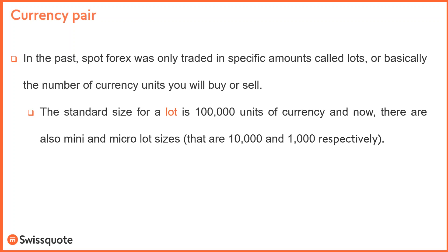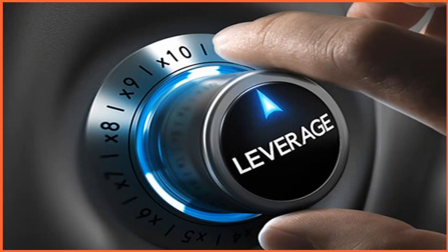The standard size for a lot is 100,000 units of the first currency, the base currency. Now there are also mini and micro lot sizes. Since different years ago, the minimum is not the full lot in spot forex. There are also mini lots — 10,000 contracts — and micro lots, which are 1,000 contracts.